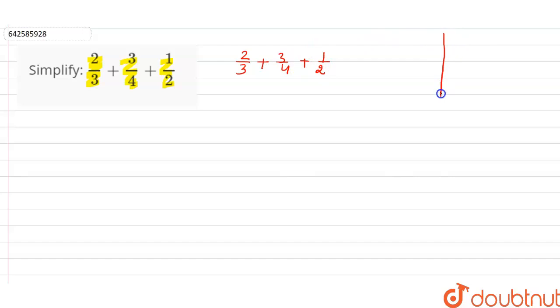Now, if you observe, the denominators of all these fractions are not the same. These are unlike fractions. So firstly, we have to make the denominators equal. For that, we have to take the LCM of 3, 4 and 2.